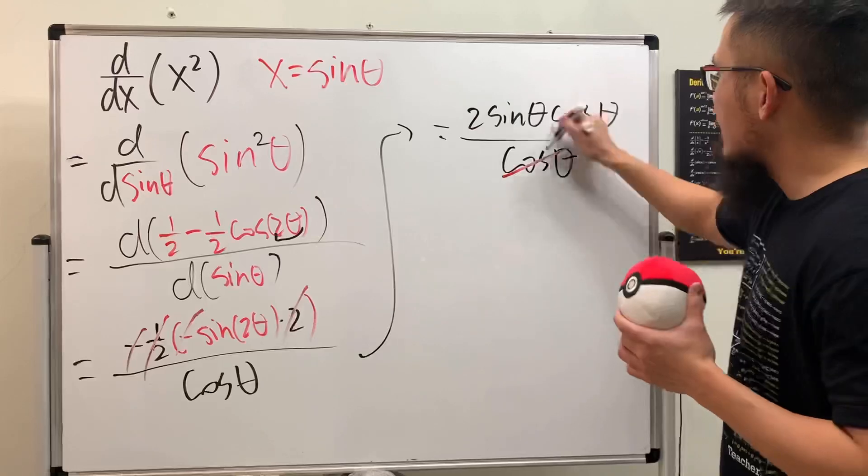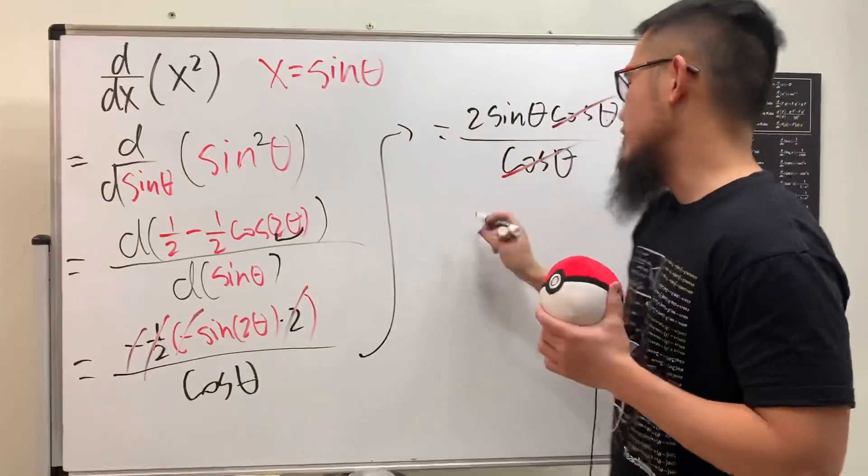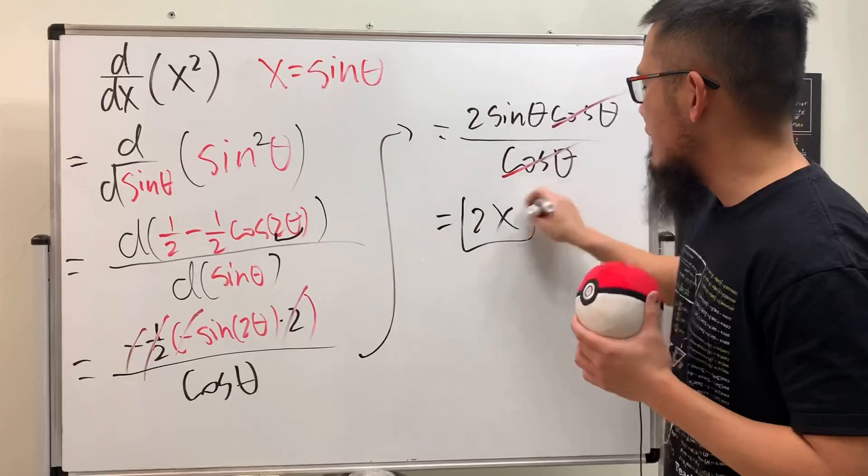And yes, the cosine theta cancel. We have 2 sine theta. Sine theta is equal to x. So therefore, the answer is 2x, and we are done.